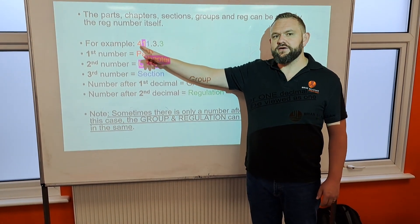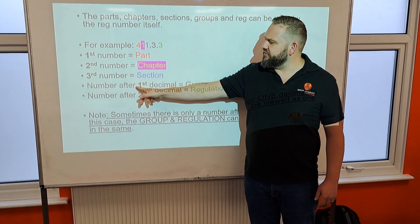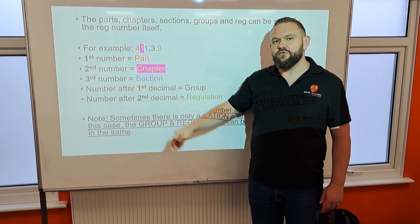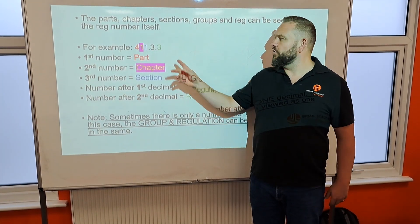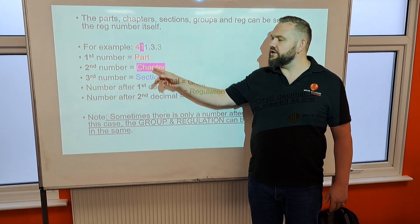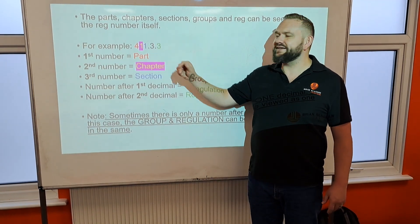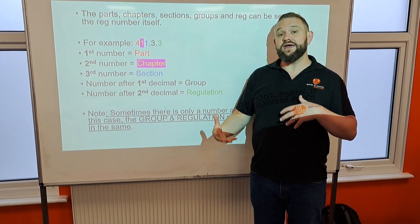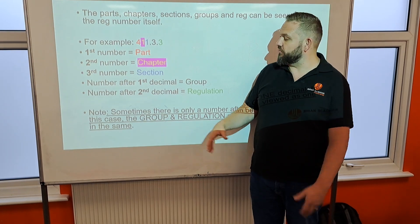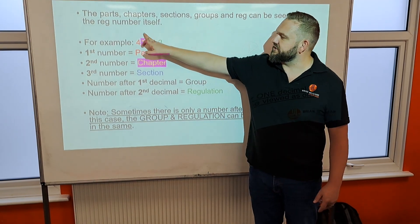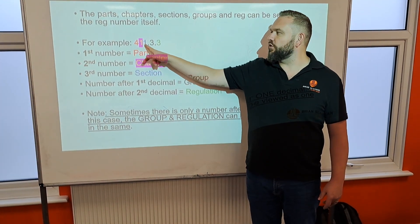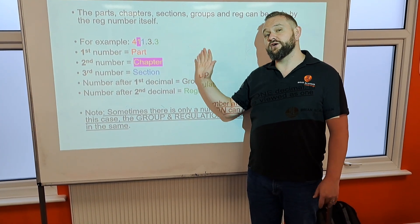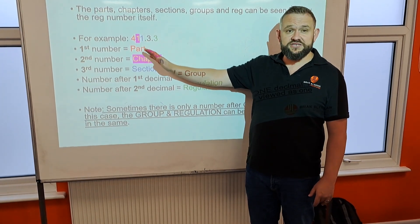The first number after the decimal will then represent the group of regulations where that can be found, and the next number after the second decimal normally represents the regulation number. So we're looking at an entire reg number such as 411.3.3.